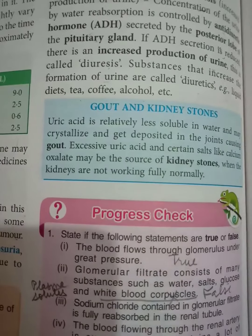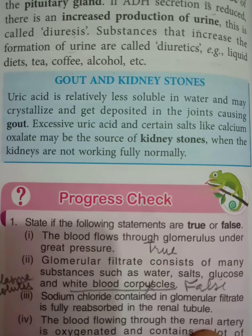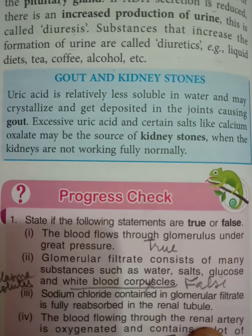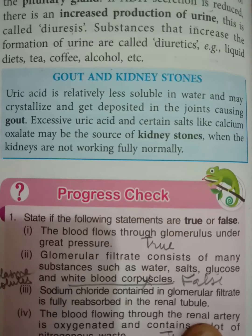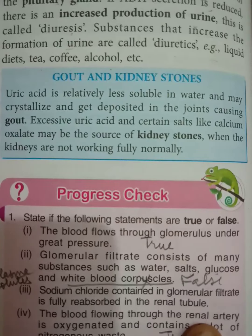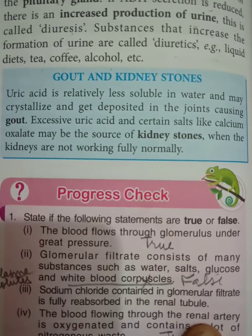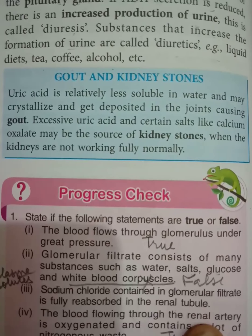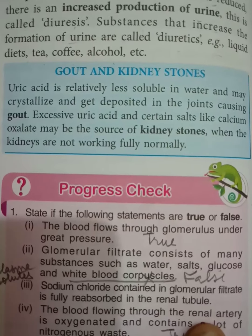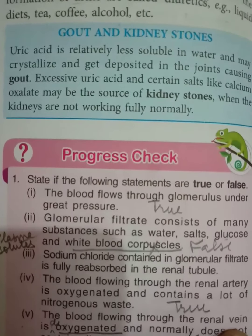Regarding gout and kidney stones: uric acid is relatively less soluble in water and may crystallize and be deposited in the joints, causing gout — that is, painful swelling in the joints. Excessive uric acid and certain salts like calcium oxalate may be the source of kidney stones, and this happens when kidneys are not working fully normally.